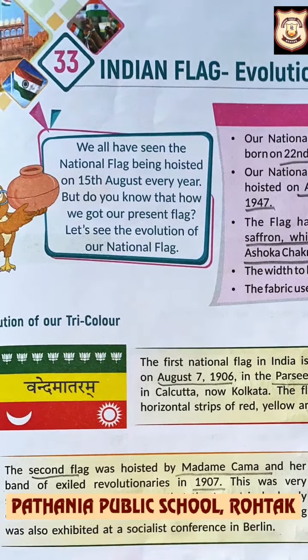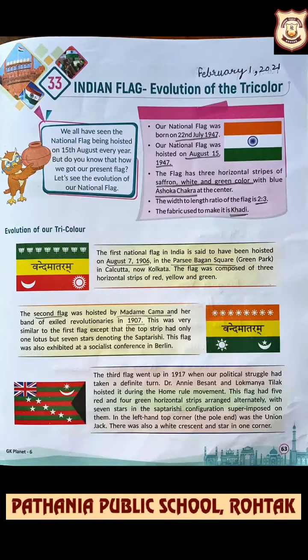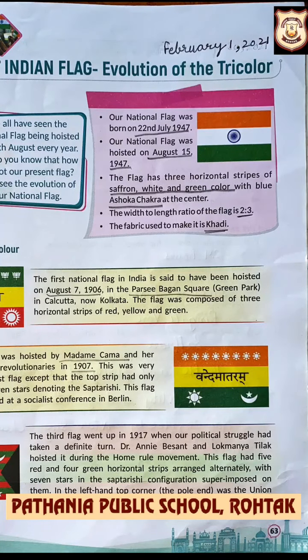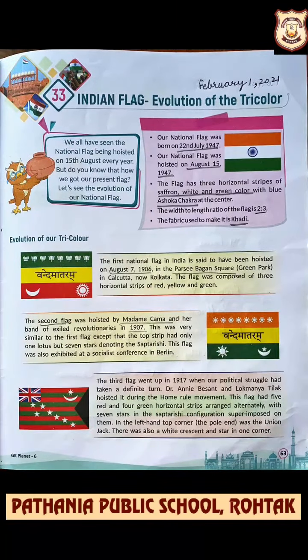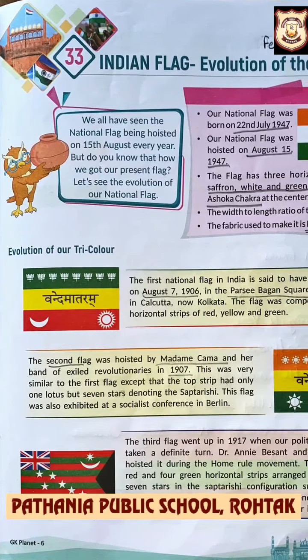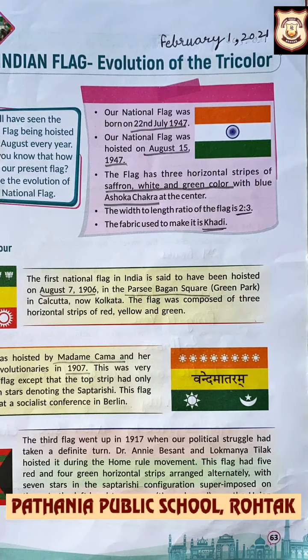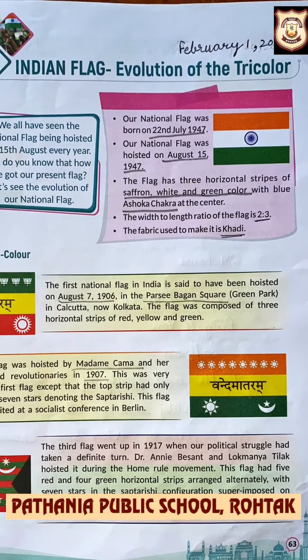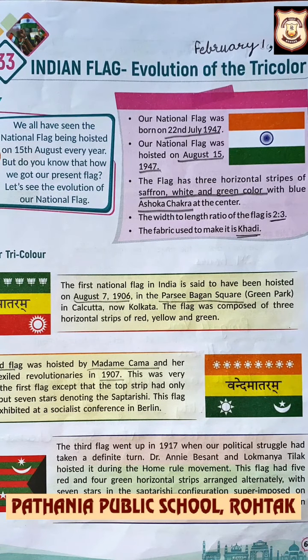The second National Flag was hoisted by Madame Bhikaiji Cama and her band of exiled revolutionaries in 1907. It was very similar to the first flag except that the top strip had only one lotus but seven stars denoting the Sapt Rishis. So in the first flag we have lotus, and in the second we have stars which denote the Sapt Rishis.